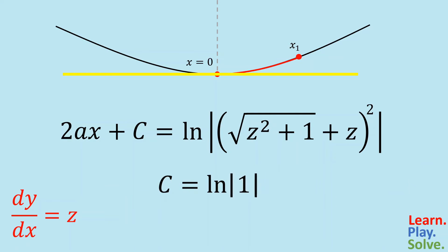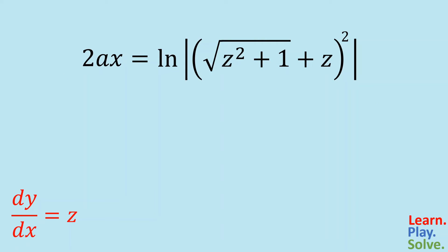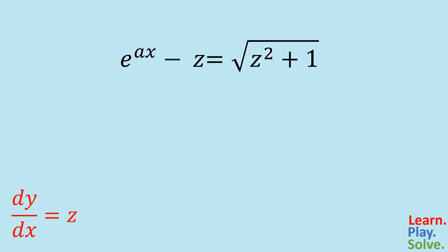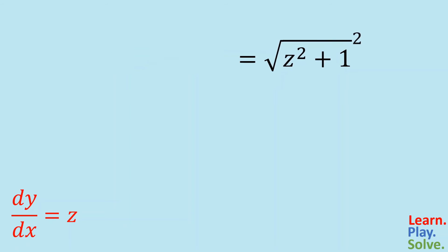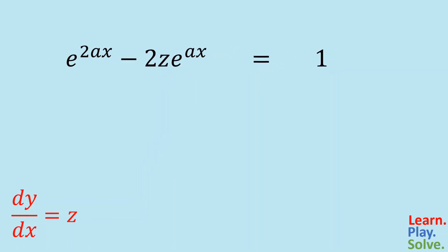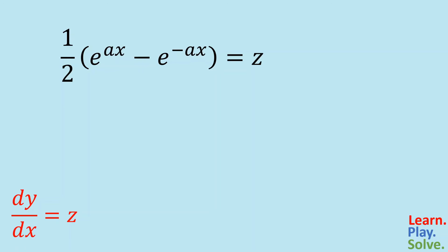This simplifies to the ln of 1, which is 0, so c is 0 and we can get rid of it. This is a natural logarithmic equation, and the base of the natural logarithm is e, so we can rewrite this as a power of e. Taking the square root of both sides and simplifying, then subtracting z and re-squaring both sides allows us to expand the left side by foiling. On the right side the square power cancels the square root. We now have z squared on both sides, which cancels out. Solving for z and substituting back dy/dx gives us a much simpler differential equation.